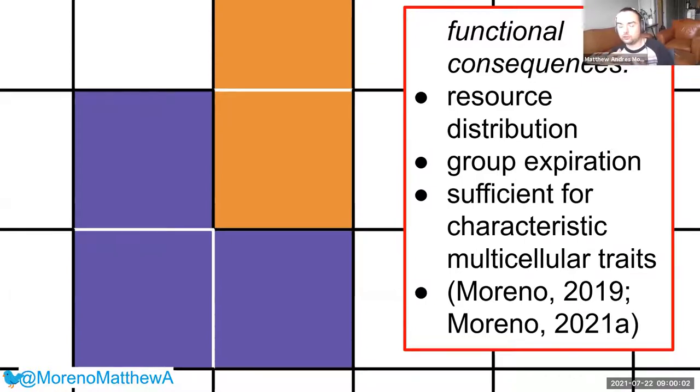We preferentially distribute resource to cells that are parts of larger kin groups in order to incentivize information. And in order to ensure turnover and opportunity for continued generation of kin groups, we remove old kin groups from the grid to make space. And in previous work, we've shown that these kinds of approaches are sufficient to select for characteristic traits of multicellularity, like resource sharing, apoptosis and reproductive division of labor.